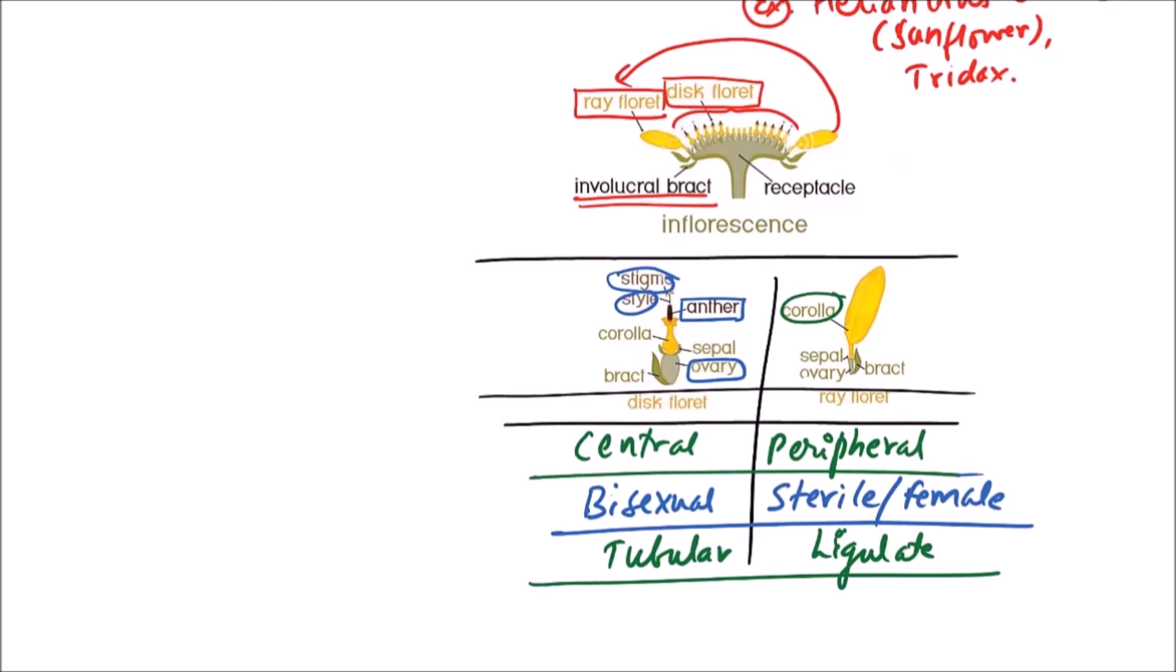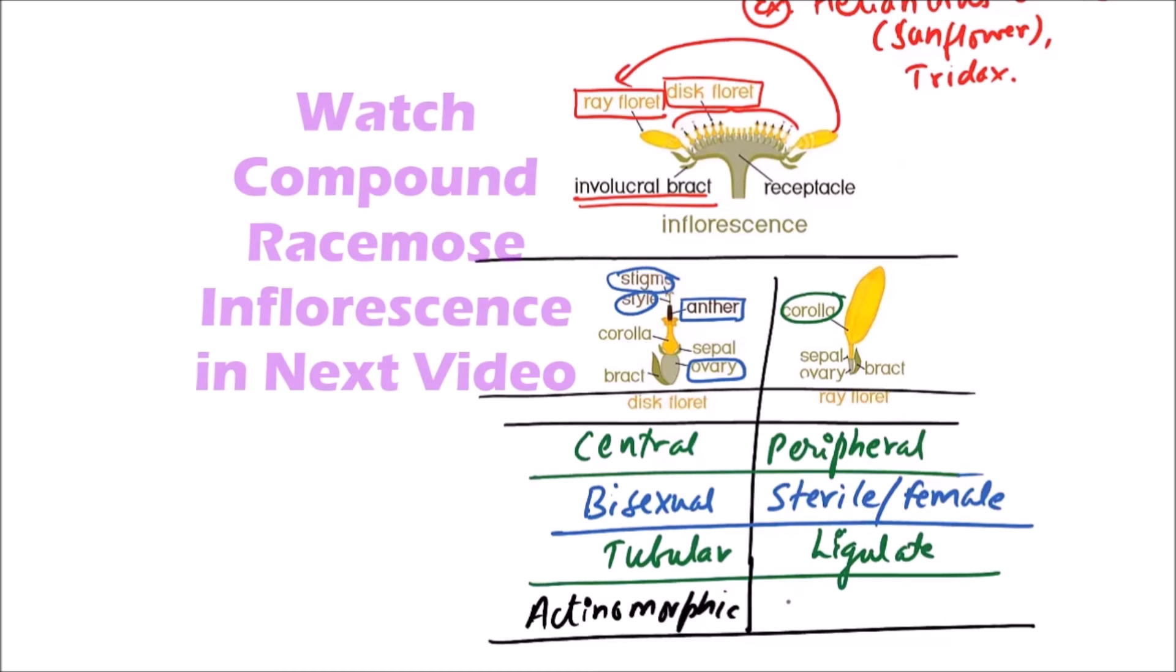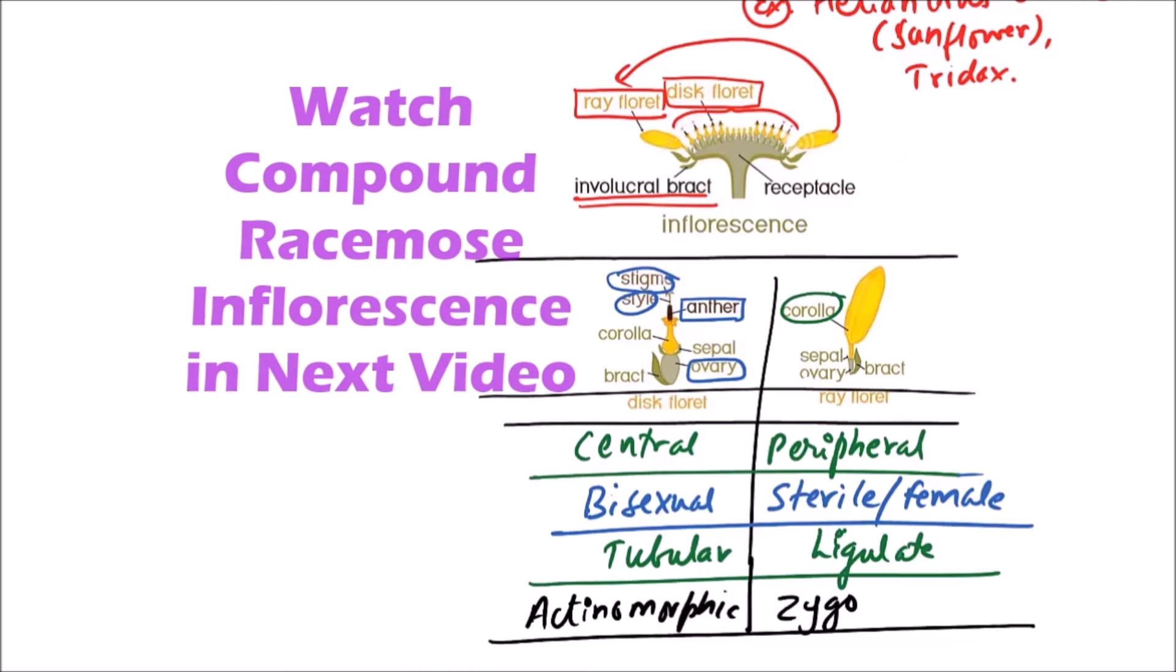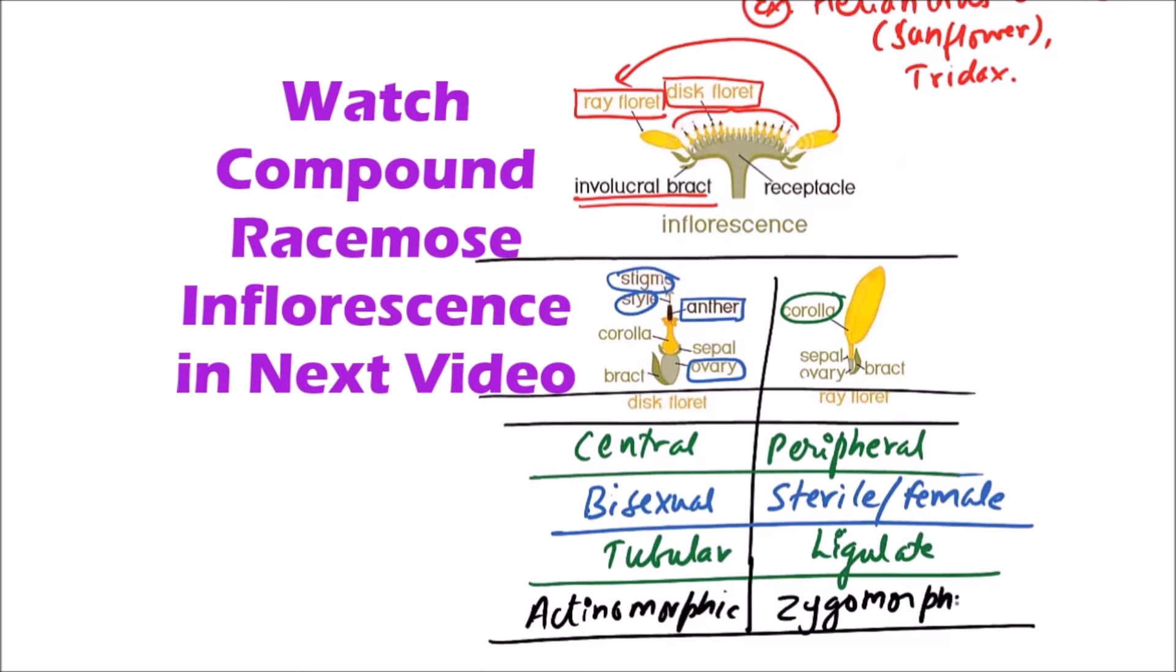Another difference is the symmetry. These are actinomorphic, which means these are radially symmetrical, while the ray florets are zygomorphic.